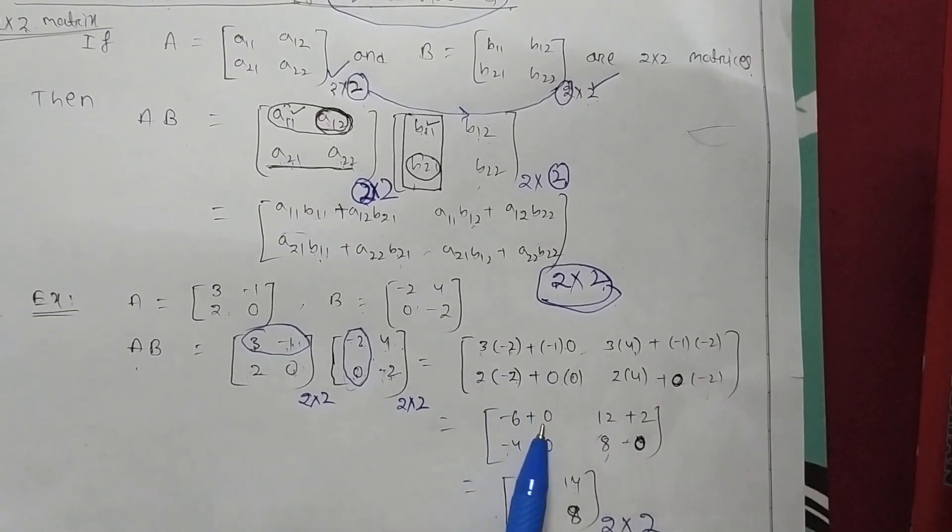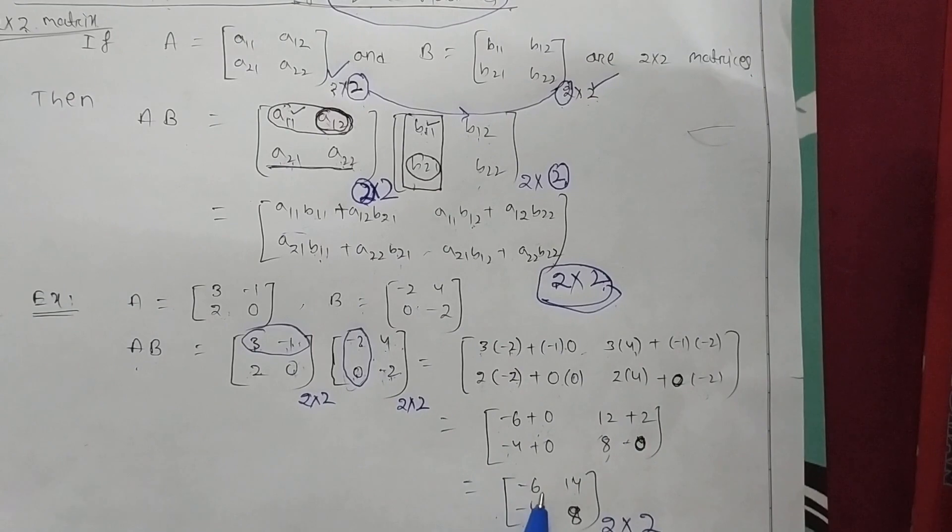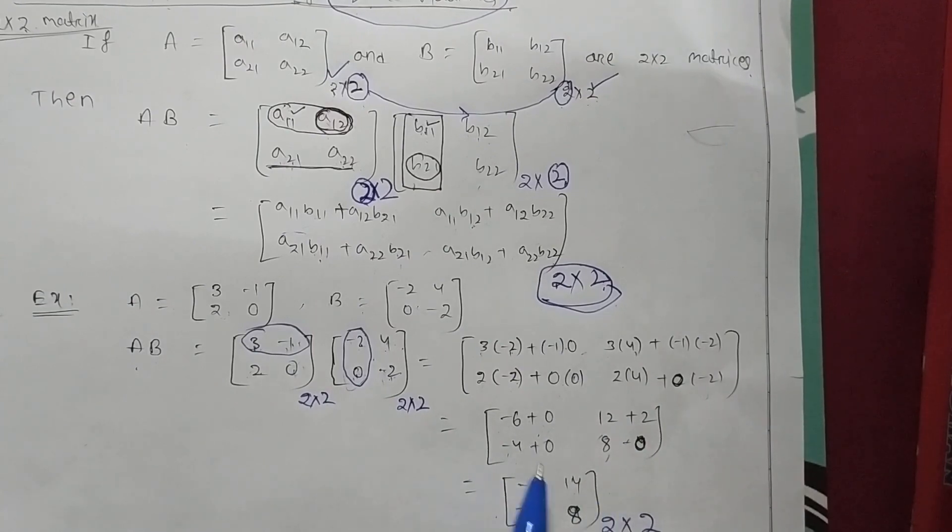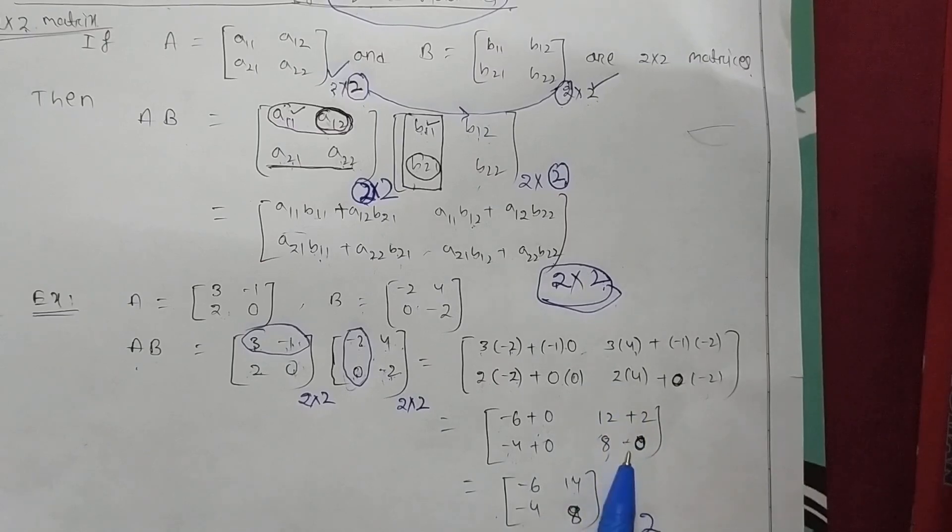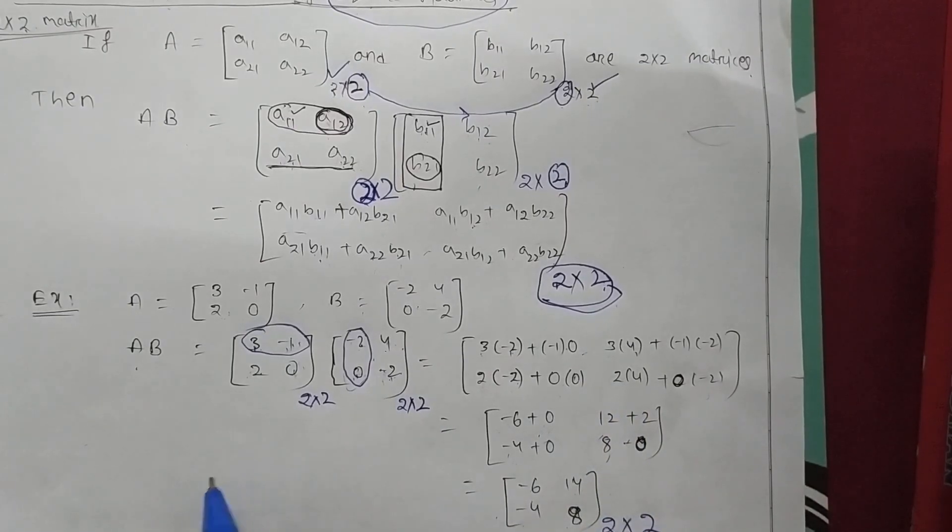And this is 12 plus 2. So minus 6, 14. And this is minus 4, and this is 2, 8 minus 0, so 8. And you can see here you are getting, since both have same number of columns of first matrix and number of rows of second matrix same, so you are multiplying both.